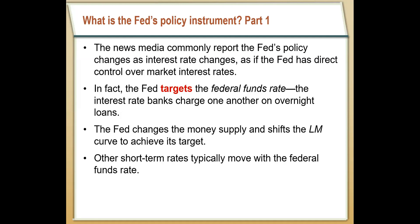If they want interest rates to go down, they increase the money supply until the interest rate is where they want it to be. When they do that, it typically moves other short-term rates as well — if the Fed changes an overnight rate, a three-month rate also goes down, then the one-year rate goes down, then the four- and five-year rates go down.